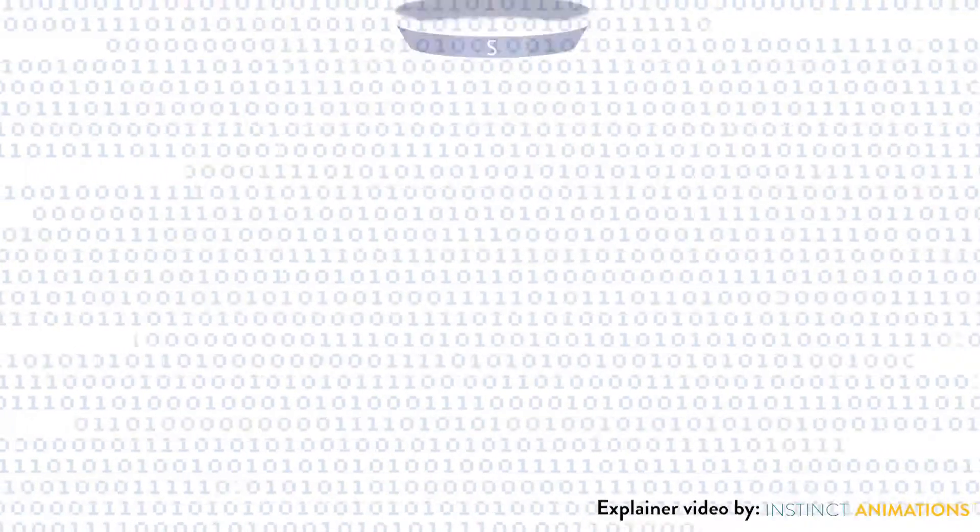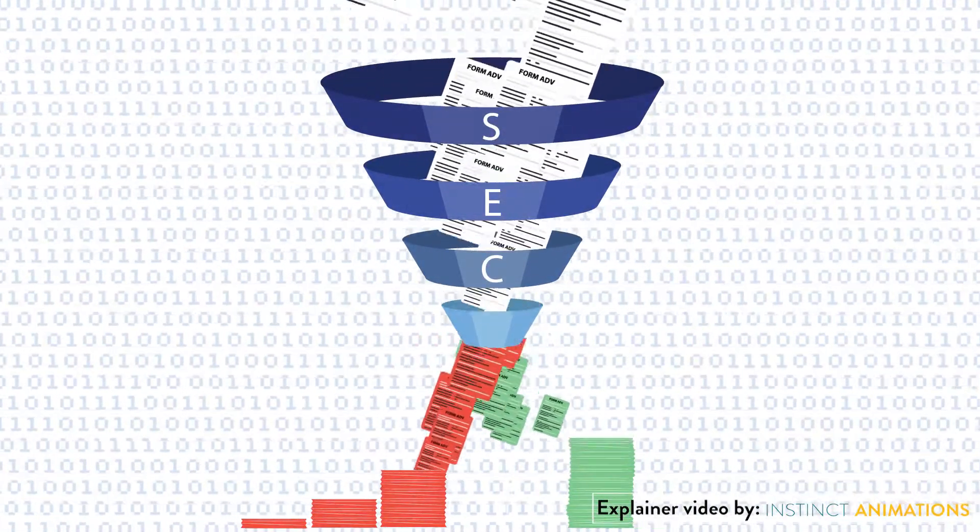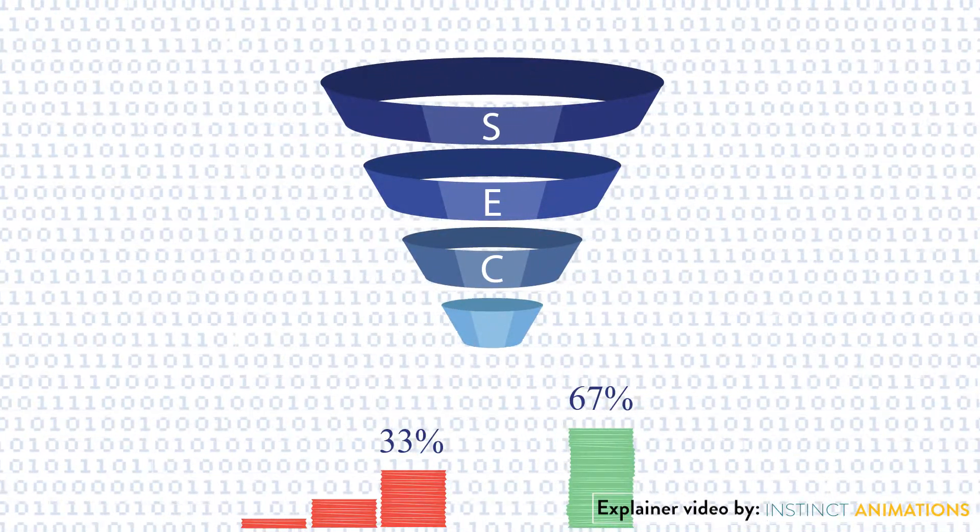Did you know that regulators use advanced data science to identify anomalies, aka bad actors, in tens of thousands of ADV filings? Probably not.